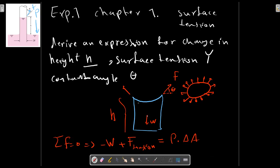We had this relation minus W plus F_surface tension equals to delta P multiplied by A. In this case, delta P, there is a free surface and we have also the delta P here.